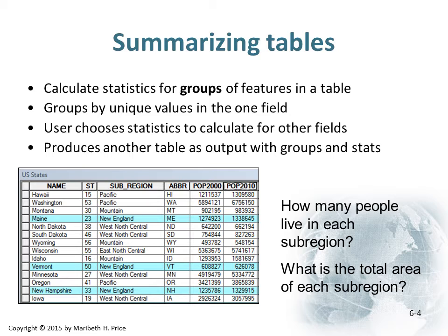When we summarize tables, we can calculate statistics for groups of features in a table. We can group by unique fields, choose statistics to calculate for other fields, and produce another table as output. There are lots of different ways you can do this — you can calculate sums, averages, or counts, and many other things are available within the tool.